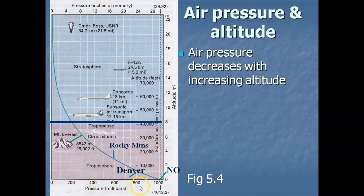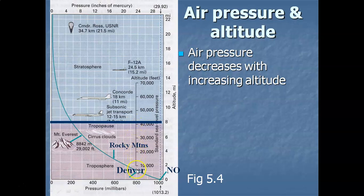At Denver, the standard reading is 800 millibars. High pressure moving in gives a reading above 800 — 801, 802, 803. Low pressure gives 799, 798, and so on. Denver has much lower air pressure readings because at one mile up you have less atmosphere above you, hence less weight.